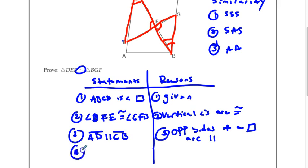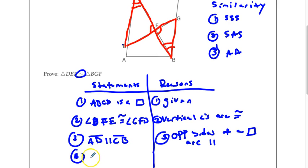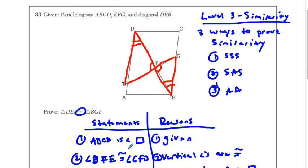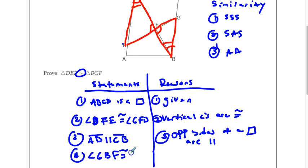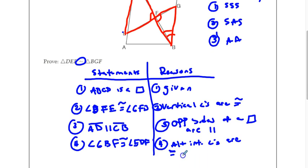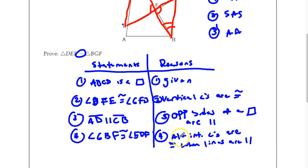Now, number four. Now, we can state the angles are congruent. So, angle GBF is congruent to angle EDF. Because alternate interior angles are congruent when lines are parallel. Okay?